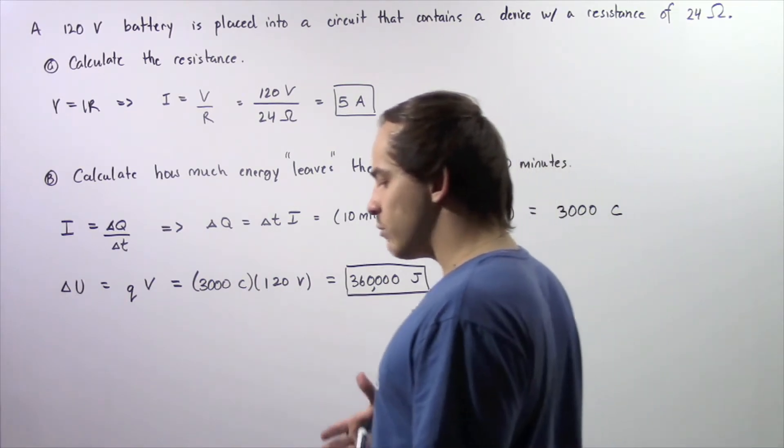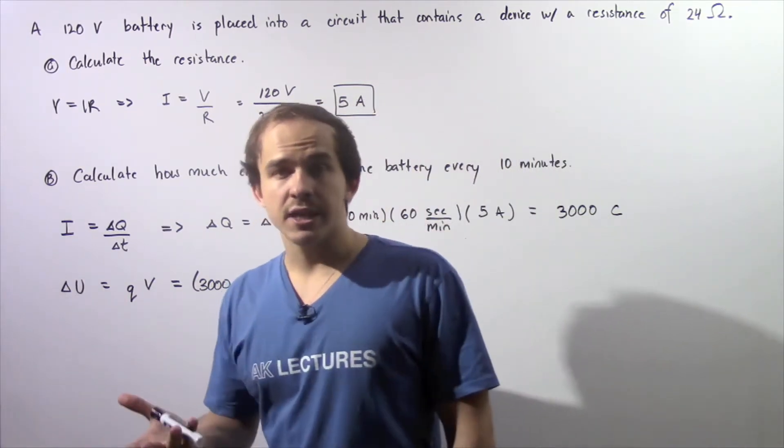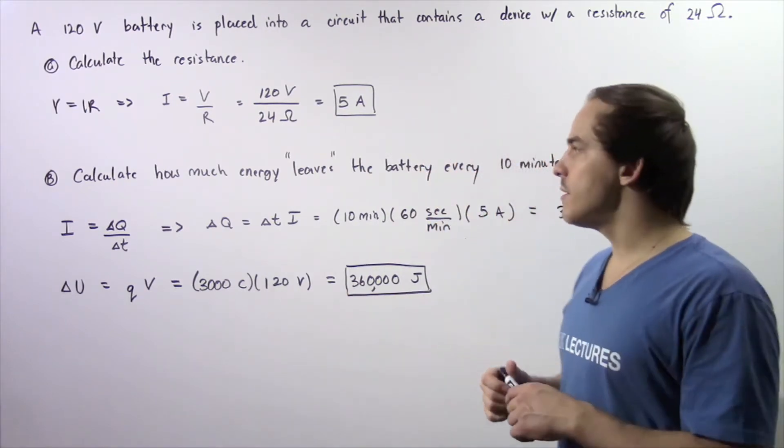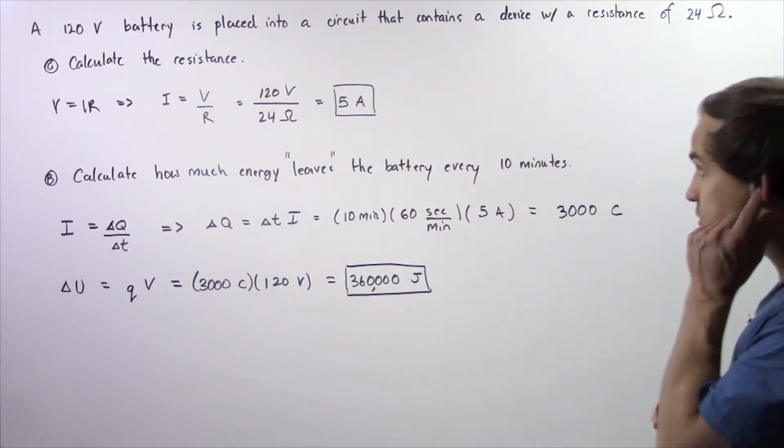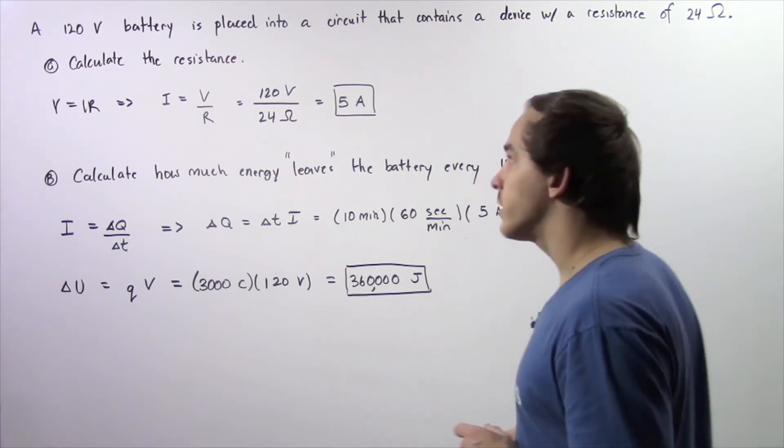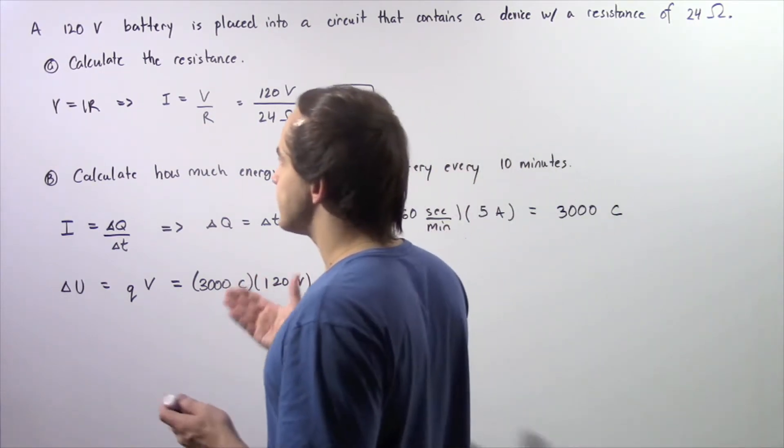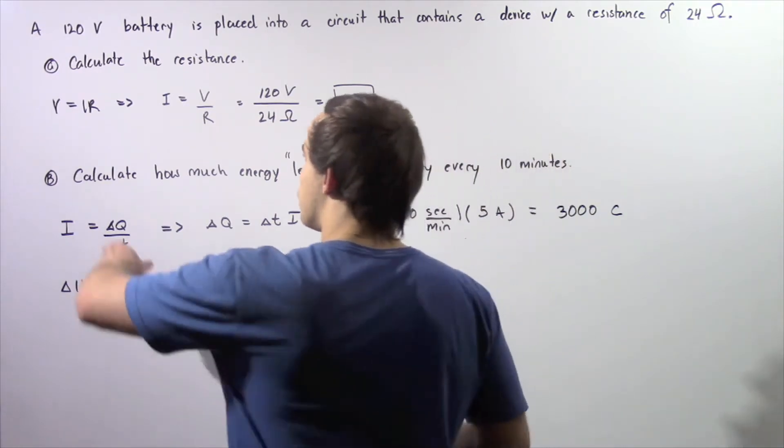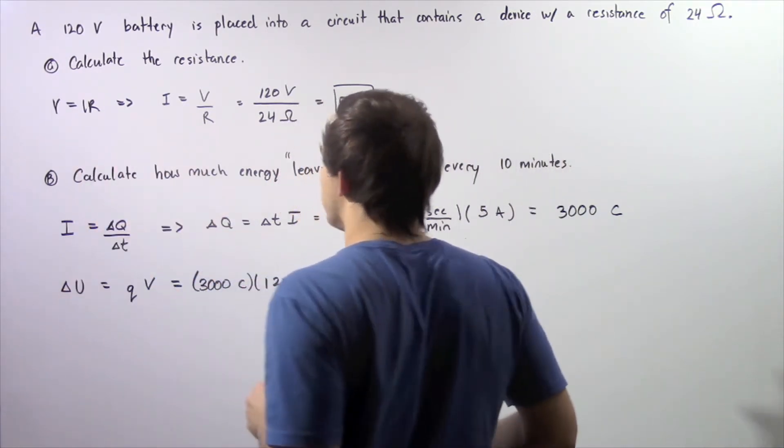In part A we want to calculate the resistance, in part B we want to calculate how much energy leaves the battery every single 10 minutes. Let's begin with part A. Part A is essentially an application of Ohm's law. The voltage is equal to the product of the resistance and the electric current.